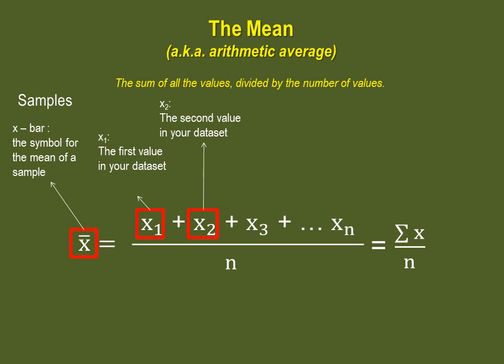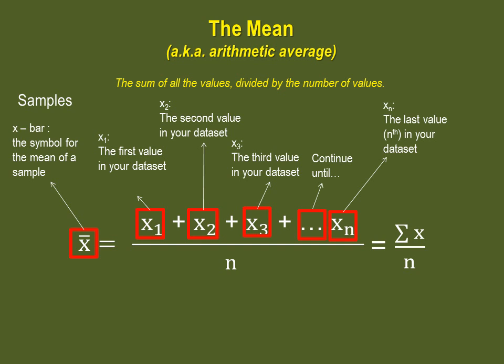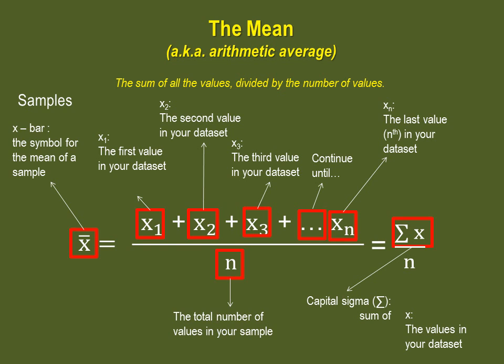You have x1, the first value in your data set, to which you'll add x2, the second value, then x3, the third value, and so on until you reach the last value, xn. You will divide the sum of all of your values by n, the total number of values in your sample. We can simplify this by writing sigma x divided by lowercase n.